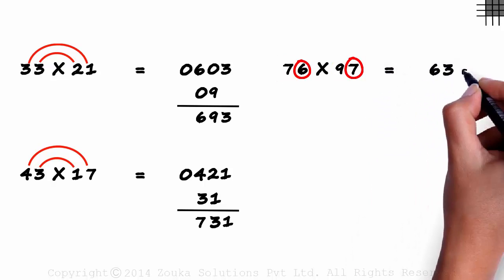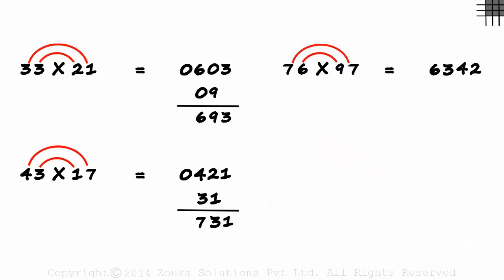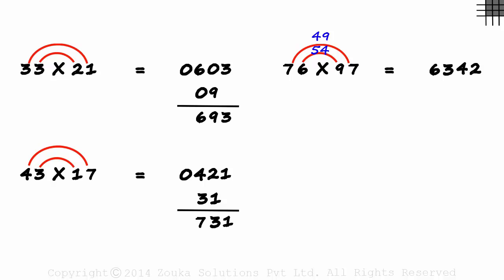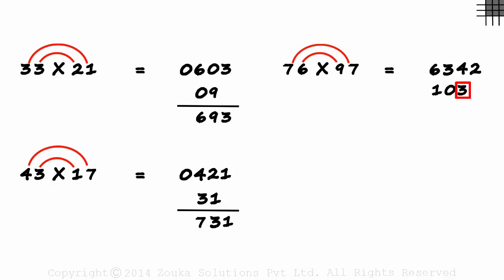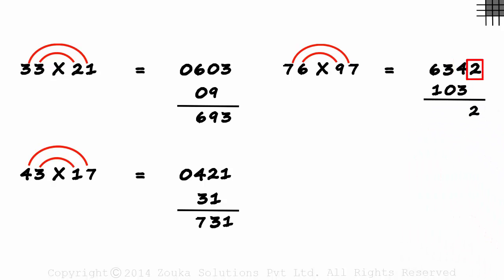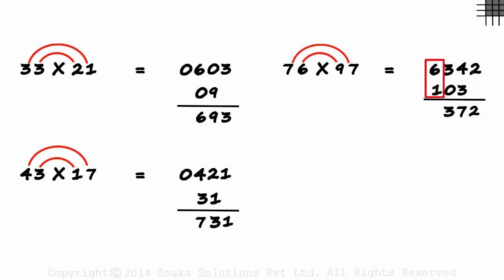7 times 9 is 63, and 6 times 7 is 42. 9 times 6 plus 7 times 7 is 54 plus 49, which is 103. We wrote the 3 under the second digit from right of the number on top. 2, 4 plus 3 is 7. 3, 6 plus 1 is 7. 7372 is our answer.